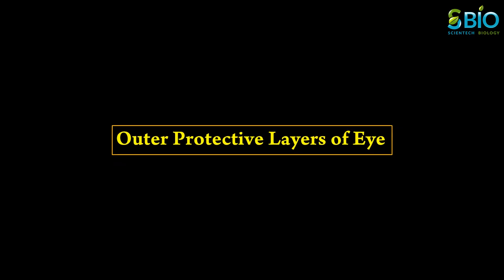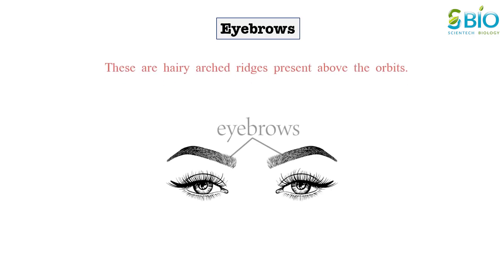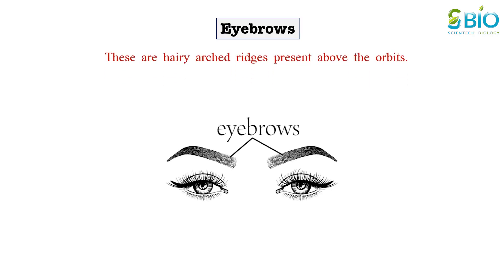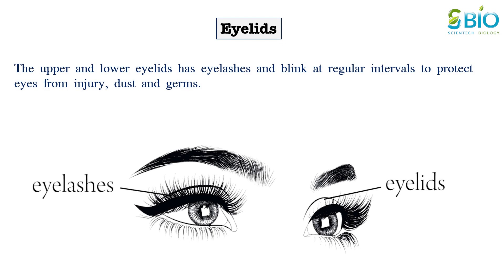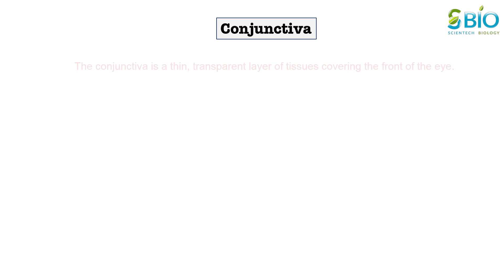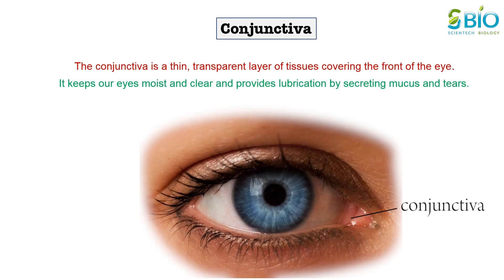Let's see the outer protective structure of an eye. Eyebrows are hairy arced ridges present above the orbits. Eyebrows protect the eyes from dust and sweat. The upper and lower eyelids have eyelashes and blink at regular intervals to protect eyes from injury, dust and germs. The conjunctiva is a thin, transparent layer of tissue covering the front of the eye. The conjunctiva keeps our eye moist and clear and provides lubrication by secreting mucus and tears.